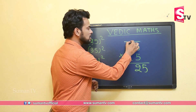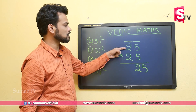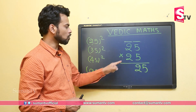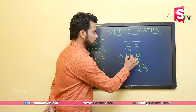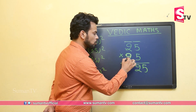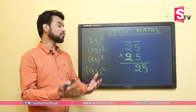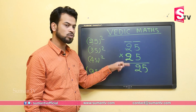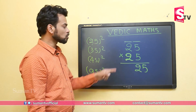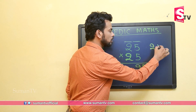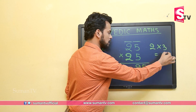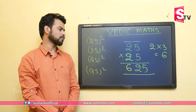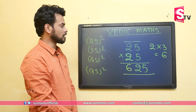Now let's come to the tens digit. The upper tens digit is 2 and the lower tens digit is also 2. We need to multiply this 2 with its successor. Successor means the next digit — 2's successor is 3. So we multiply 2 with 3, and the answer is 6. We write 6 here. So 25 multiplied by 25 is 625.